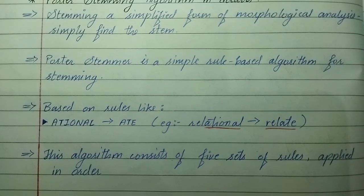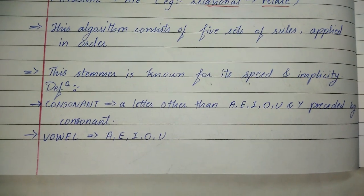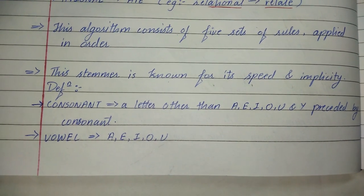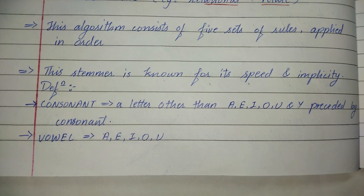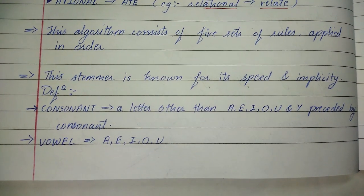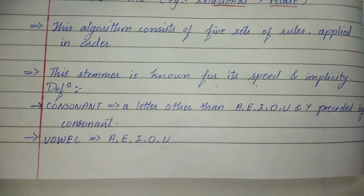This algorithm consists of five sets of rules applied in order. This stemmer is known for its speed and simplicity. Definition: consonant is a letter other than A, E, I, O, U, and Y preceded by consonant. Vowel: A, E, I, O, U are the vowels.